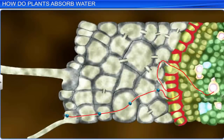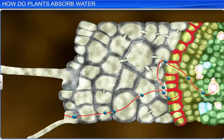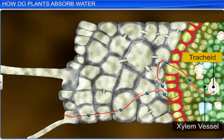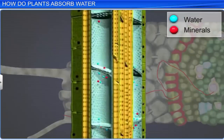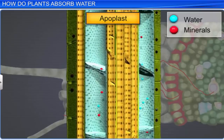Therefore, water movement through root layers is symplastic in the endodermis, and it is the only pathway that allows water and solutes to reach the vascular cylinder. Water moves freely again once it is inside the xylem, and enters the xylem vessels and tracheids. These xylem elements are non-living and therefore become a part of the apoplast movement, which occurs in the non-living parts of the root.